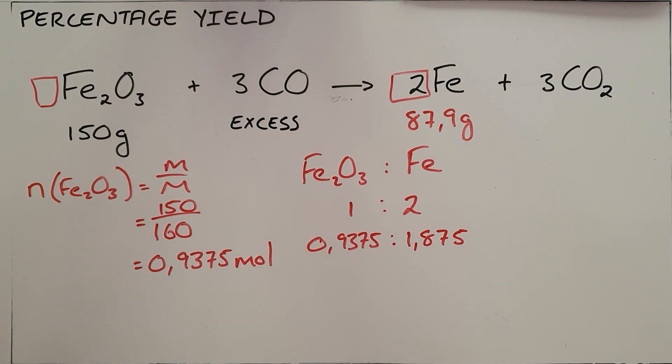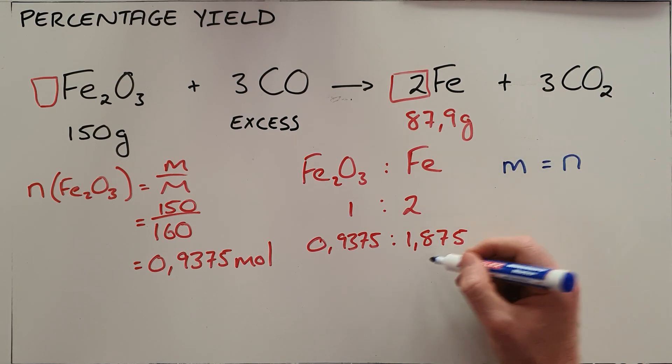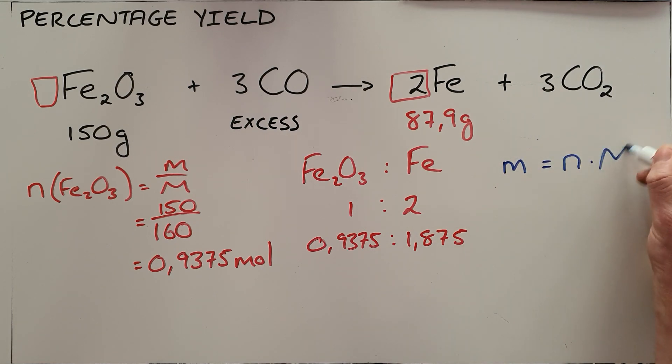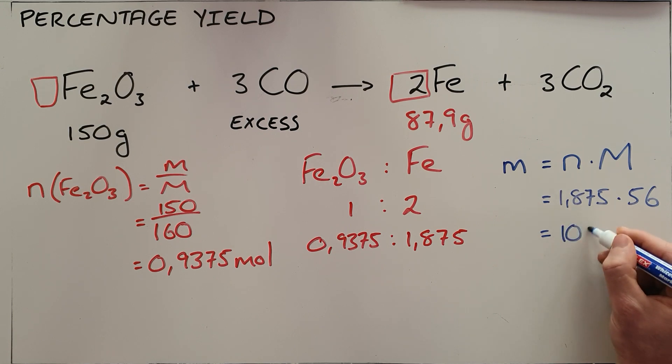That can then be converted into a number of grams, where we say the mass of iron that is produced is equal to the number of moles that we've just calculated multiplied by the molar mass of that iron. Our number of moles, 1.875, multiplied by the molar mass of 56, which means that we theoretically would expect to produce 105 grams of iron from 150 grams of iron oxide.